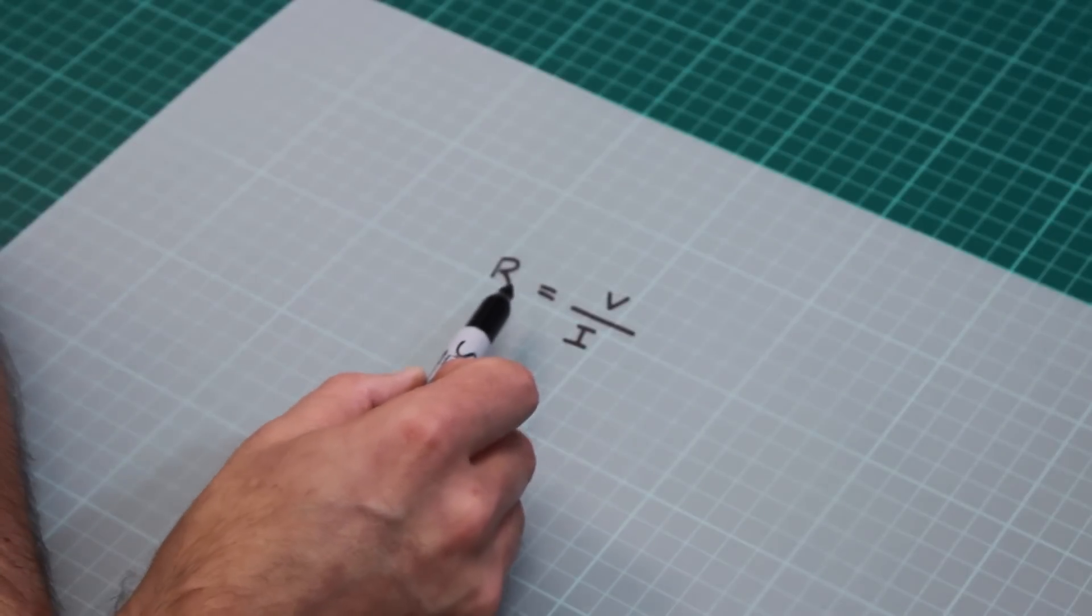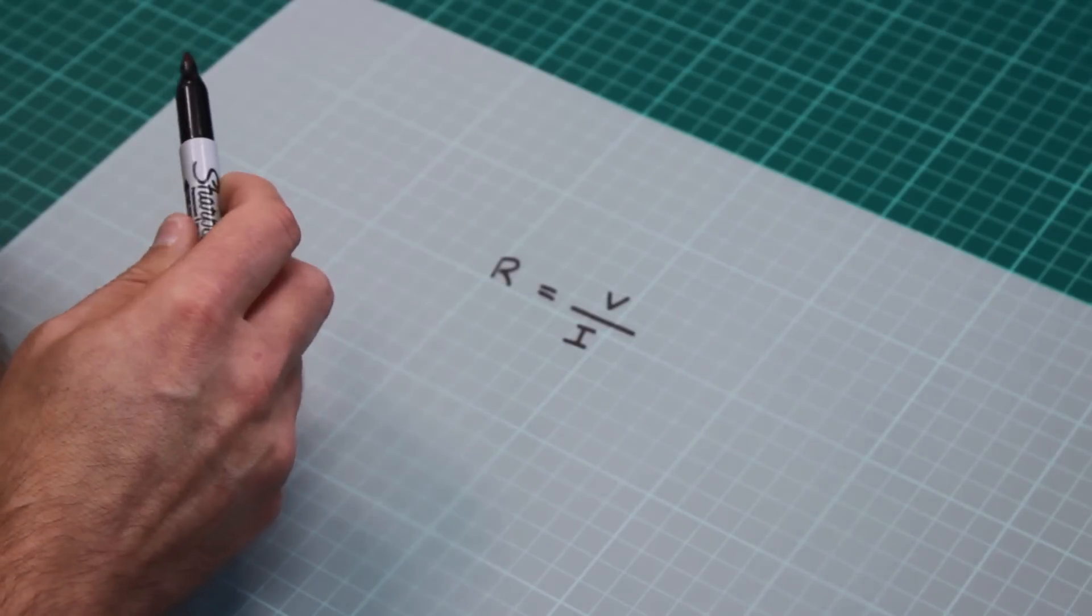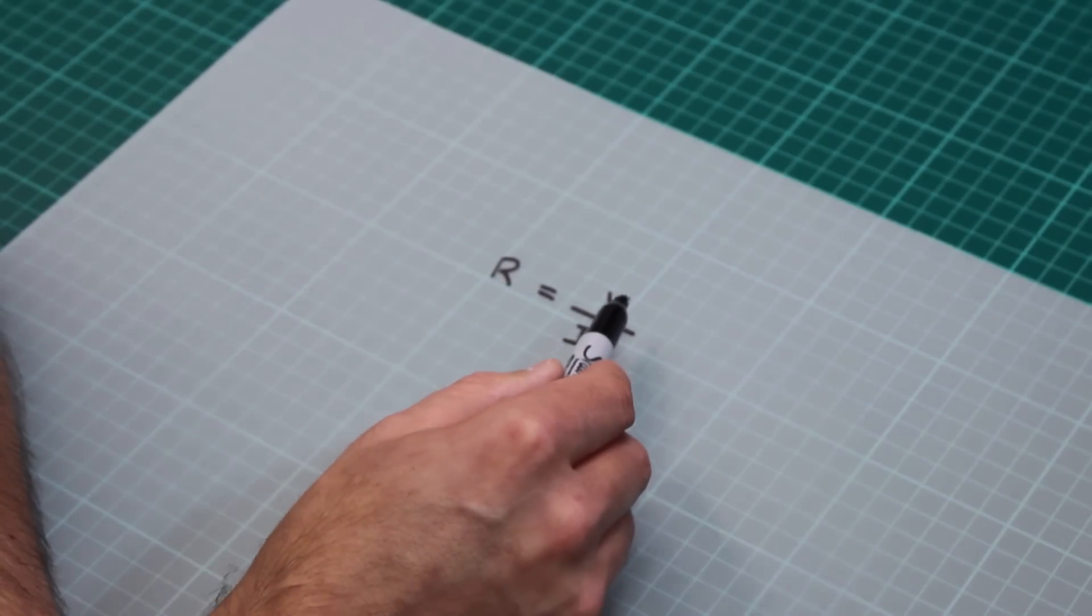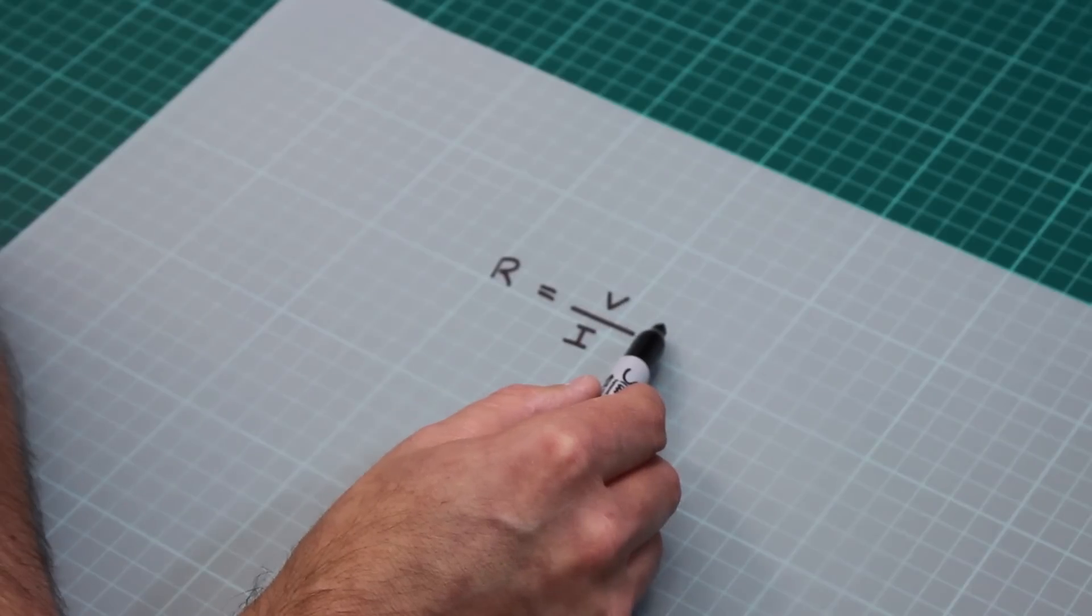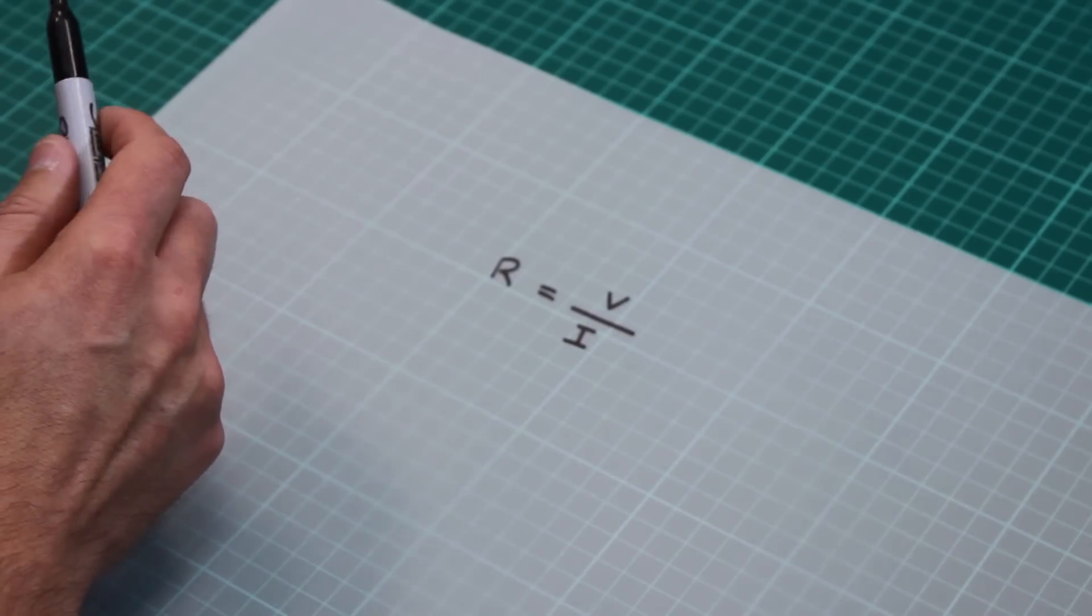We're going to use Ohm's law to calculate the value of the resistor required in this circuit. We divide the voltage across the resistor by the current that we want to flow through it.